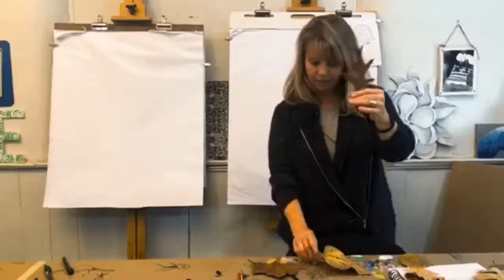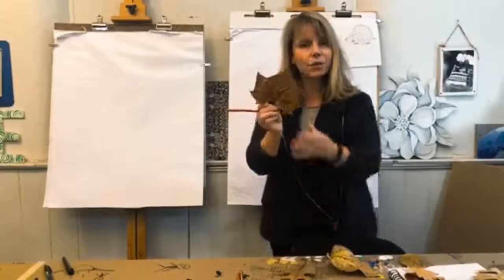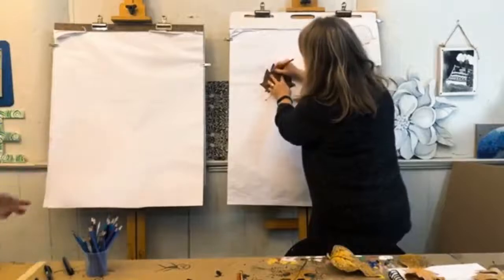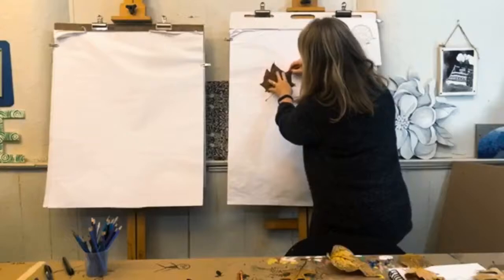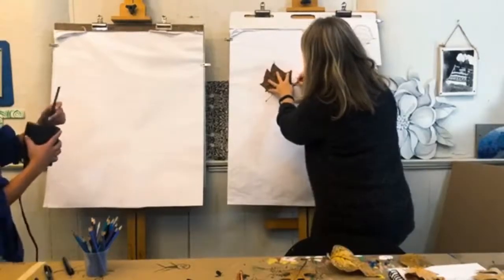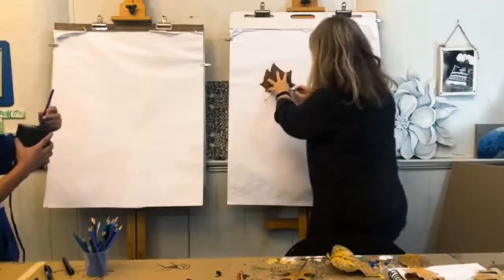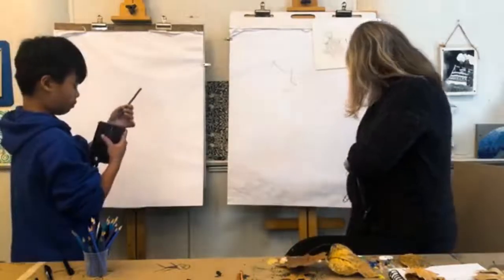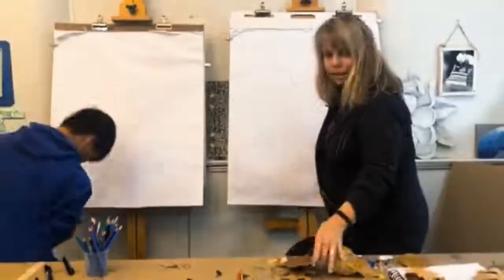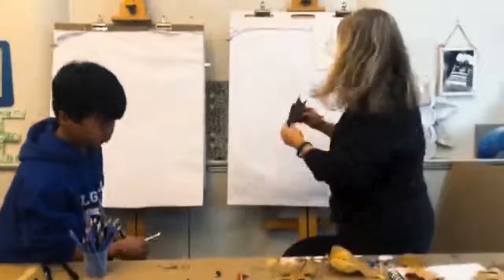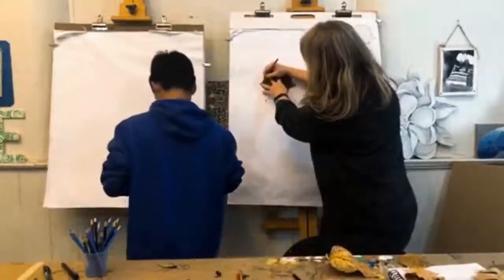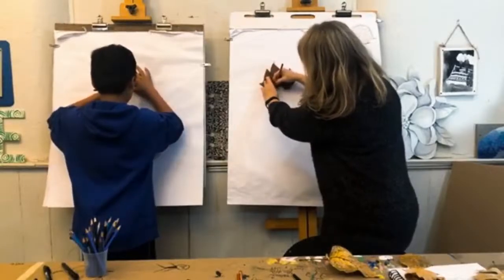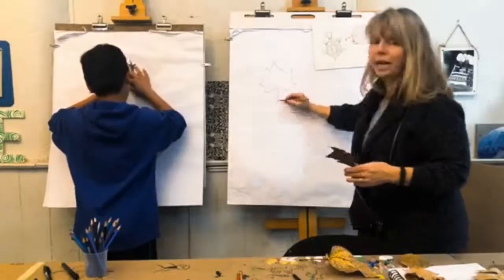This is an oak leaf. I think this is a maple leaf. I'm going to trace it on here. Tate, you want to pick a leaf shape and trace one from both of ours? This is a fun theme you can do at any time.